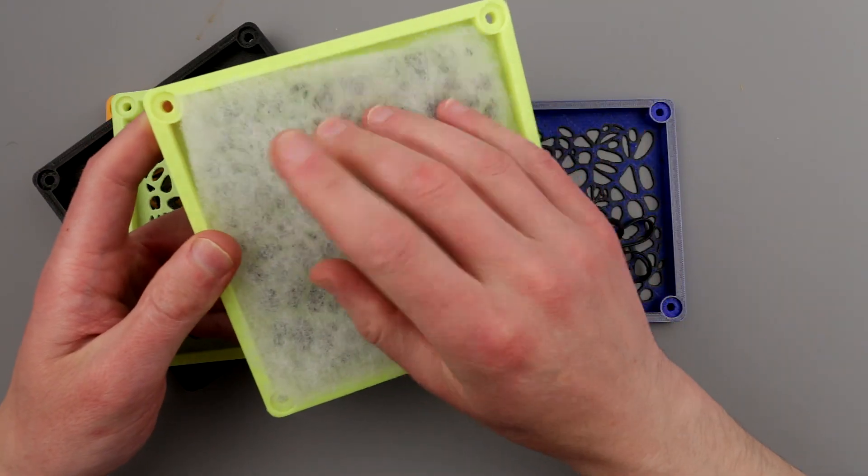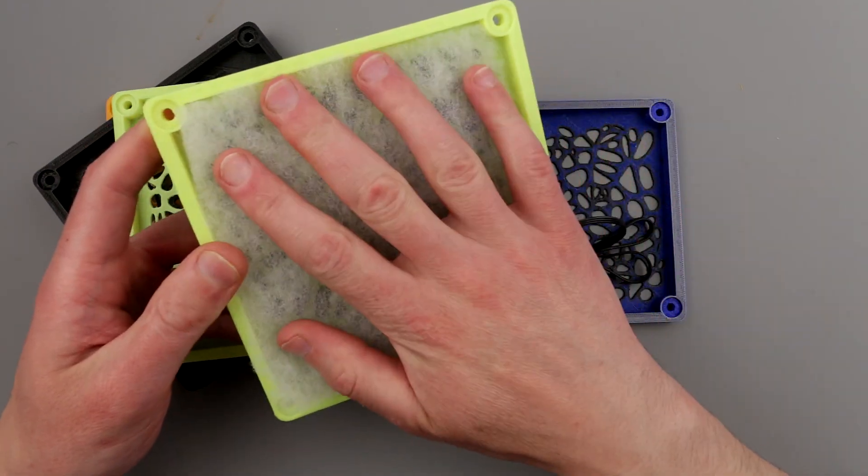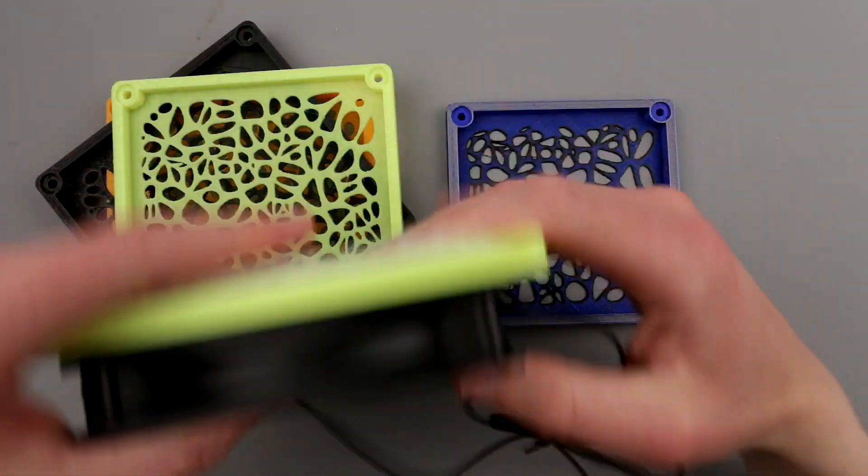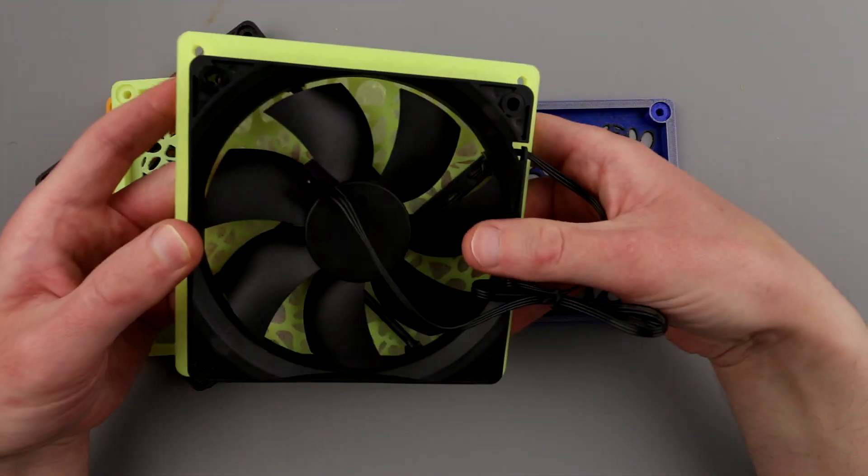This is some sort of foam, but you can use open cell foam, filtering paper, and things like that, with a 120mm fan attached here.